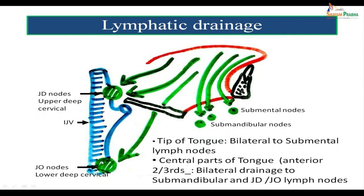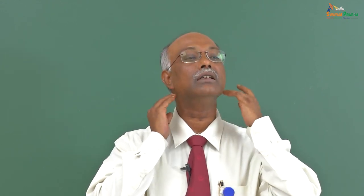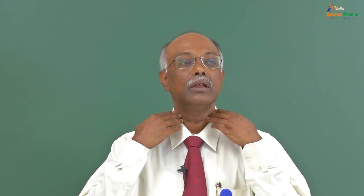Lower down along the internal jugular vein are the jugulo-omohyoid group of lymph nodes, also called the lower deep cervical group of lymph nodes. So to recapitulate: under the chin — submental; under the sides of the mandible — submandibular; upper part of internal jugular — jugulodigastric (upper deep cervical); and lower down — jugulo-omohyoid (lower deep cervical) group of lymph nodes.